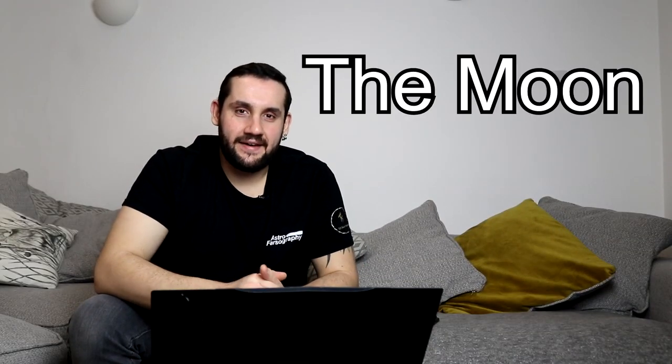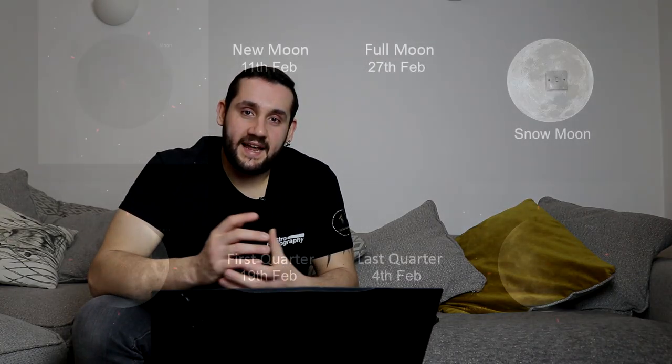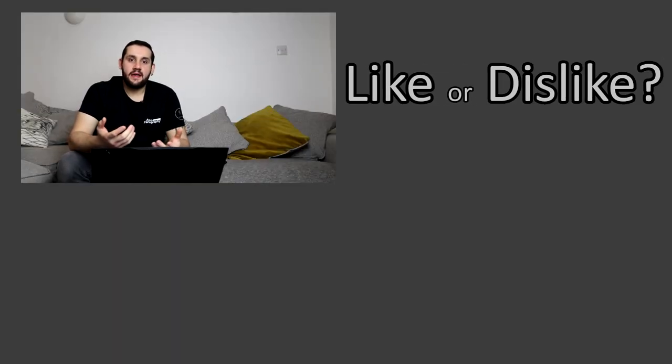Now onto the lunar phases for February, in case you want to shoot the moon or know when to get the hydrogen-alpha filter out — or just have an early night. Last quarter is February 4th, new moon is February 11th, first quarter is February 19th, and the full moon — the Snow Moon — is February 27th. I really need to research why full moons get these names, though we did have snow in January.